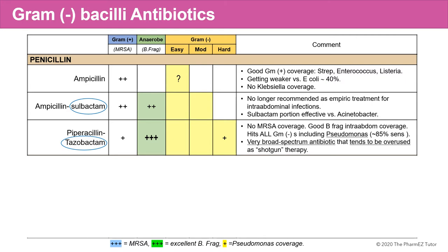Ampicillin-sulbactam has extended activity due to the enzyme inhibitor sulbactam. It does hit anaerobes, although it is no longer recommended for empiric treatment of intra-abdominal infections. It has extended spectra into moderate-to-hit gram-negative organisms, and it is effective in a certain percentage of ABC due to the sulbactam portion. Piperacillin-tazobactam has no MRSA coverage, but it has very good intra-abdominal B. fragilis coverage. It hits all gram-negatives including Pseudomonas at about 85% sensitivity, but tends to be overused as shotgun therapy, which could induce resistance against Pseudomonas.